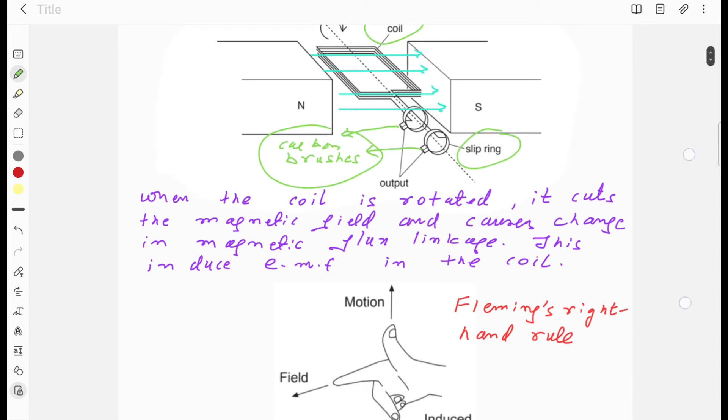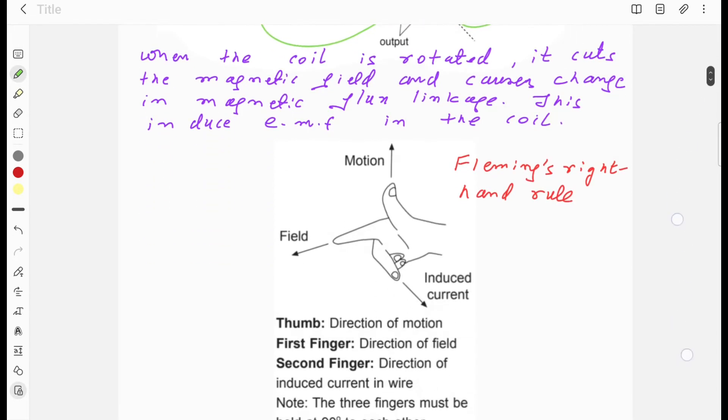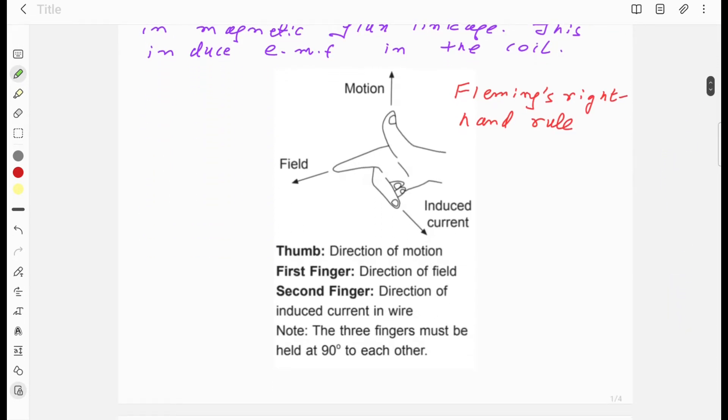You can use Fleming's right hand rule to get the direction of current. In Fleming's right hand rule, you will use your right hand. You will set your three fingers as shown in the figure making 90 degrees to each other. The field is the direction of the magnetic field, and the thumb is showing you the direction of motion. Then your second finger will give you the direction of current.